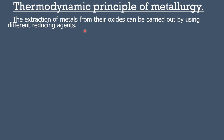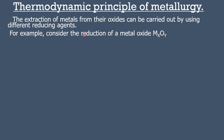Metal oxides include forms such as FeO, Fe₂O₃, Fe₃O₄, TiO₂, Al₂O₃, etc. Usually, it is represented as MₓOᵧ. The conversion of metal oxide into metal is known as reduction. That is, MₓOᵧ — a metal oxide in solid form — is converted into metal plus oxygen.